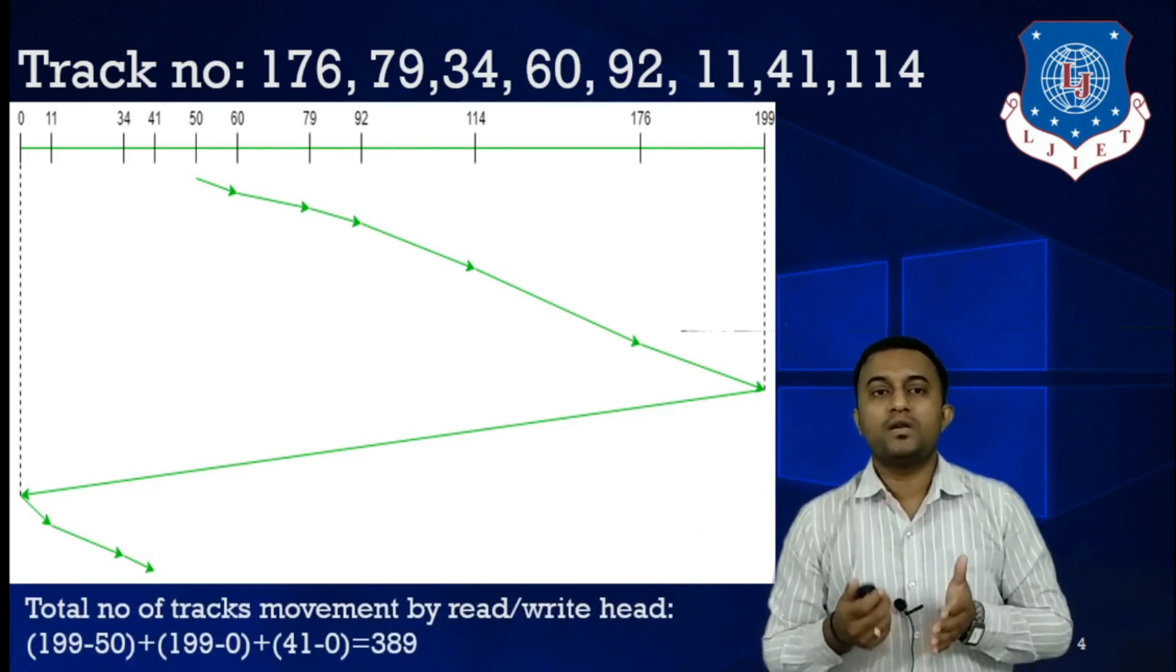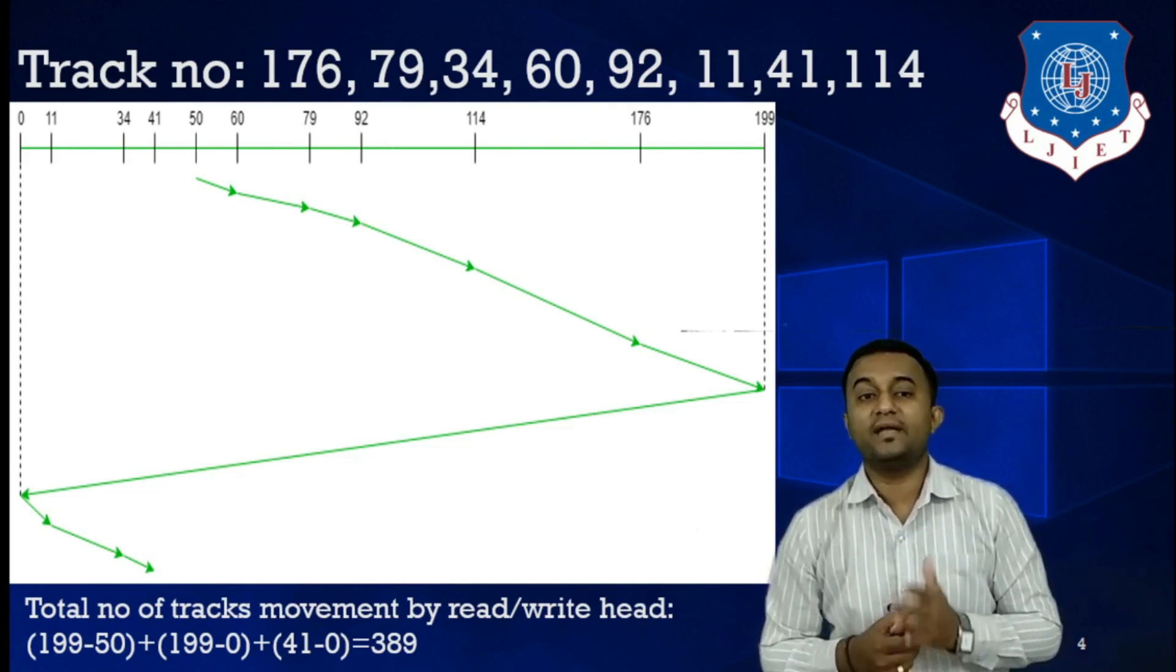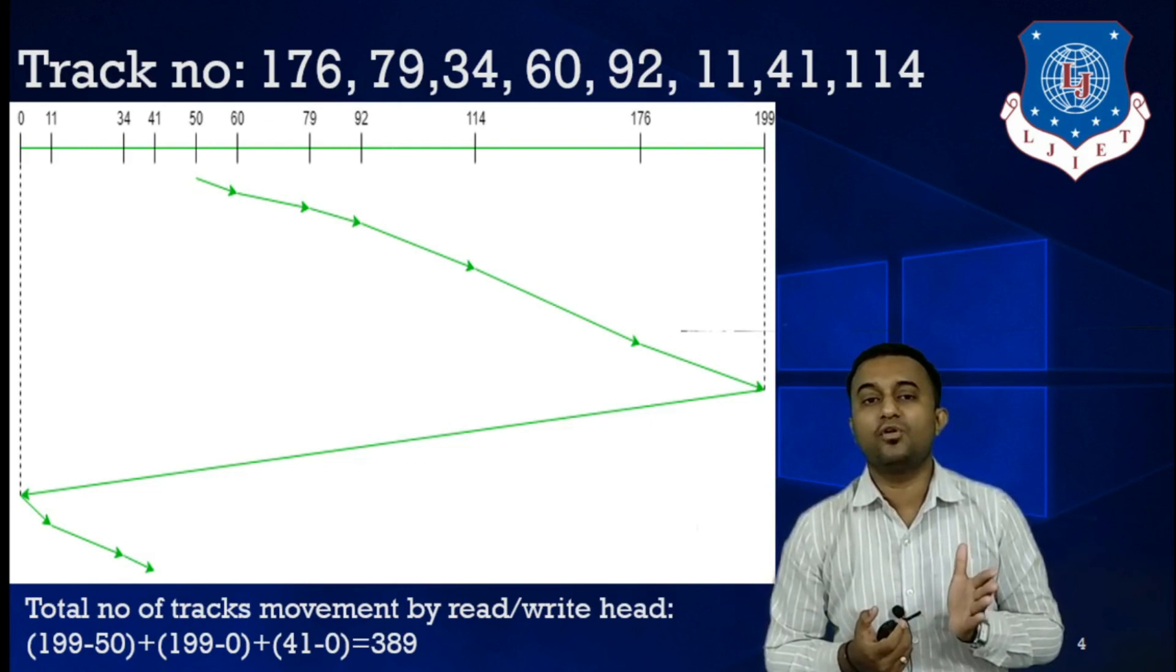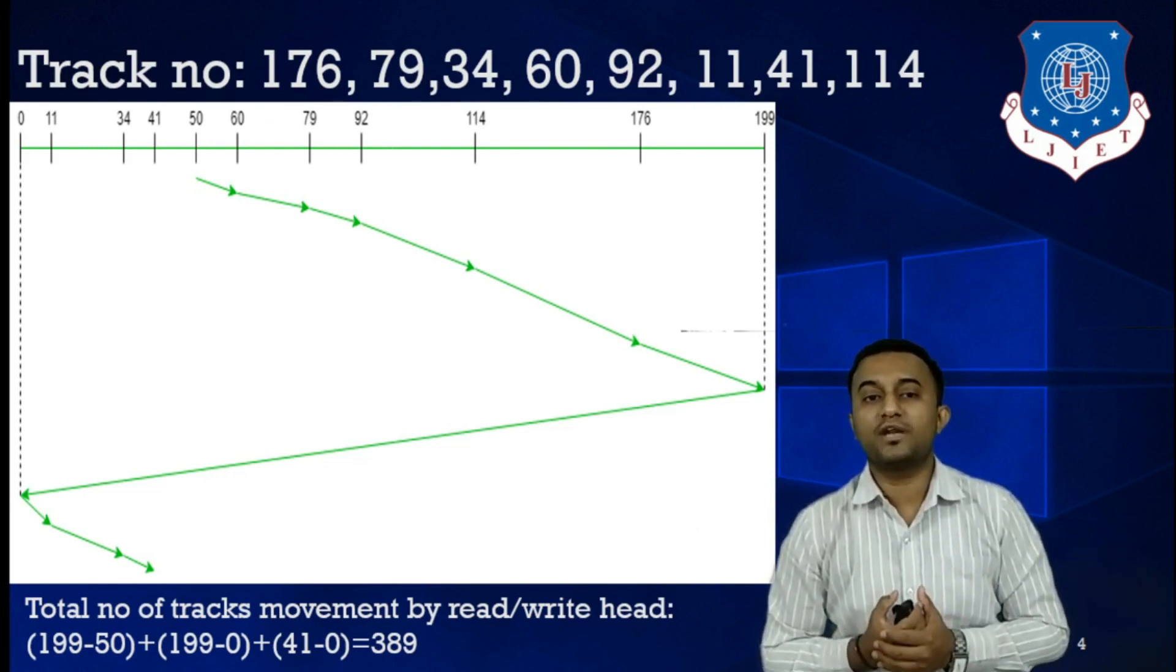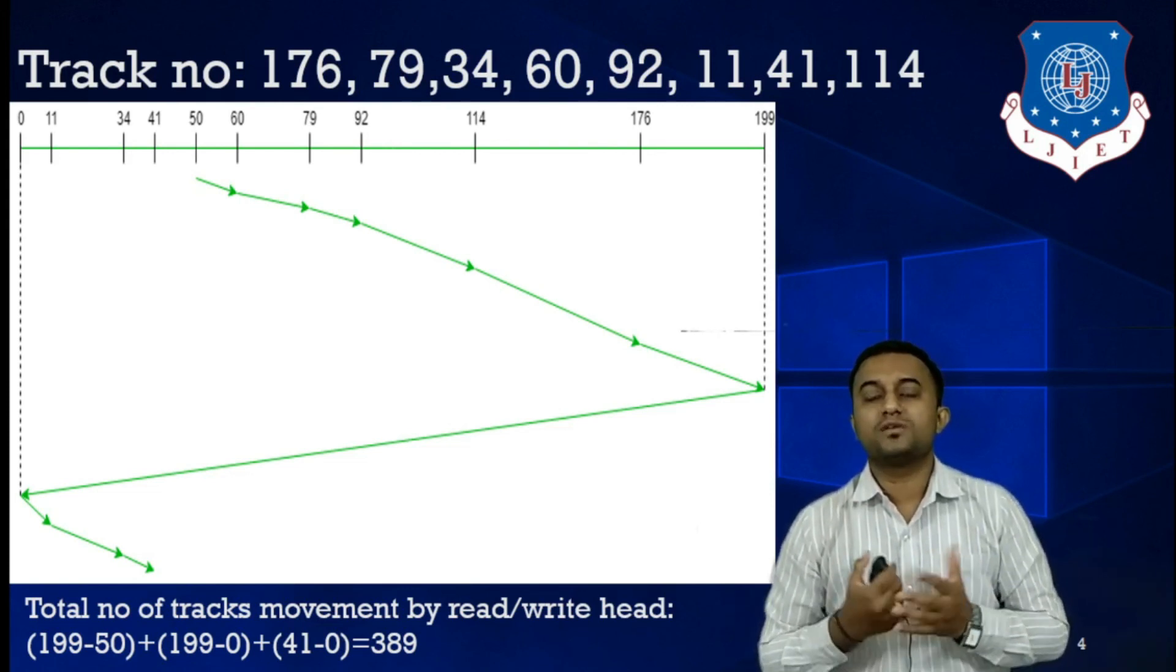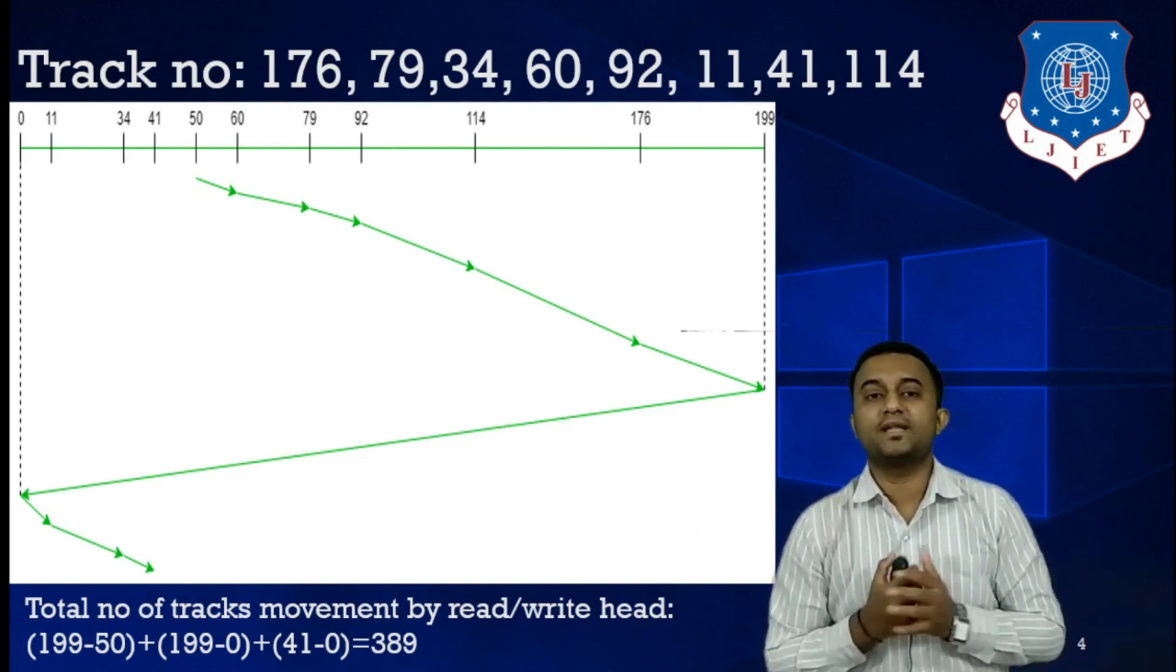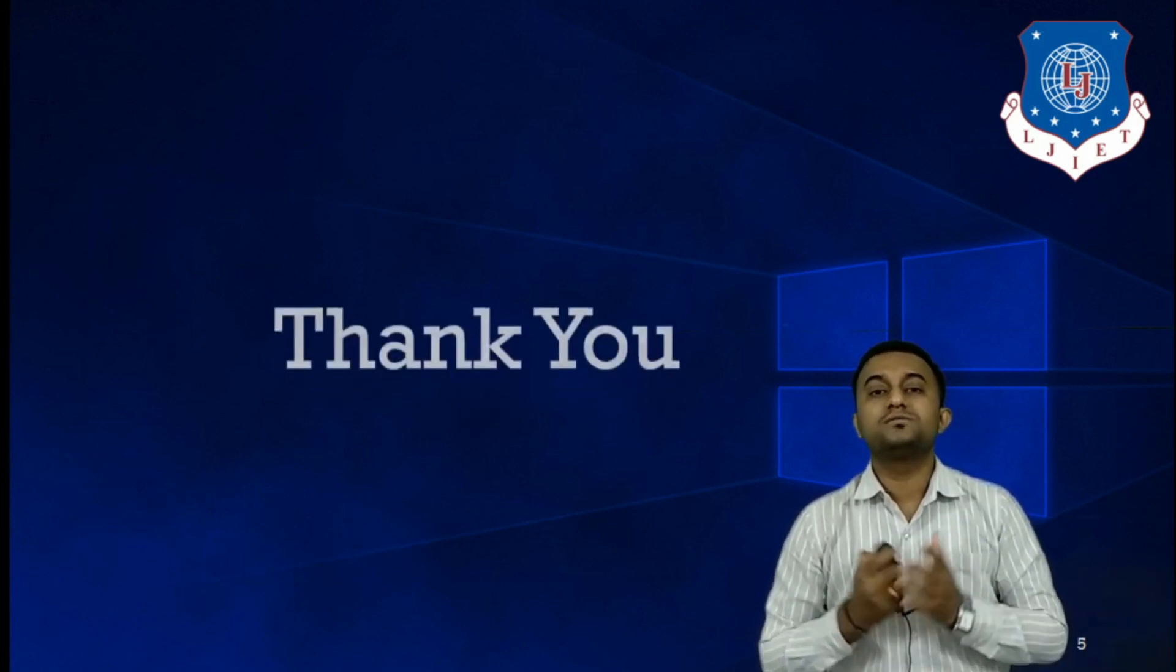The calculation is: 199 minus 50, plus 199 minus 0, and then 41 minus 0. Total is 389. You can see, if we compare the value of track movement in SCAN and the value of track movement in C-SCAN, definitely this value is larger than the previous one. This algorithm suffers from poor performance compared to SCAN algorithm. I hope it was clear to you. Thanks for watching this video. See you in the next one.